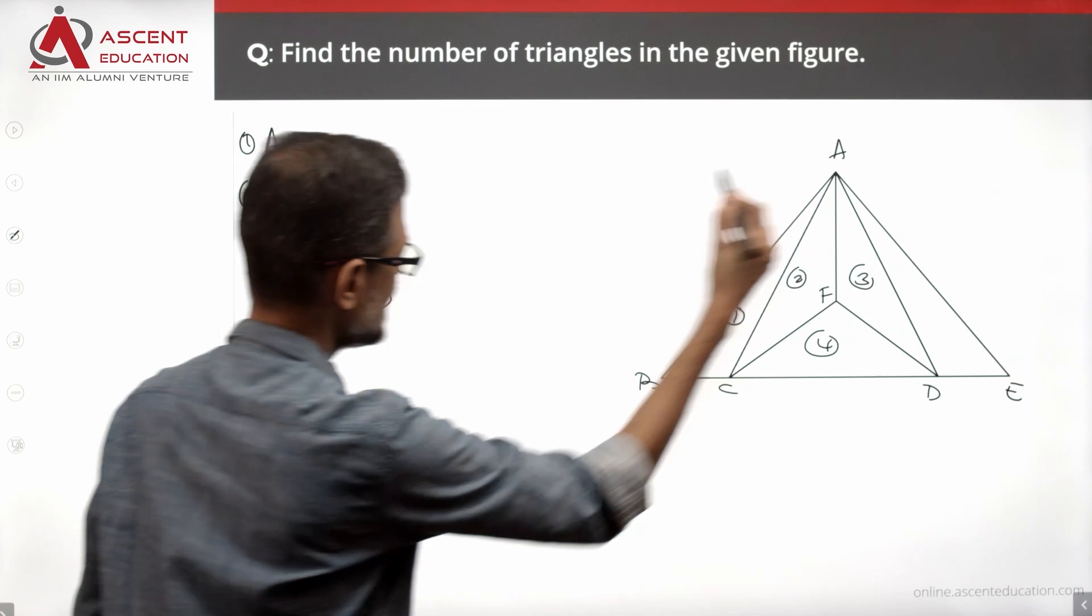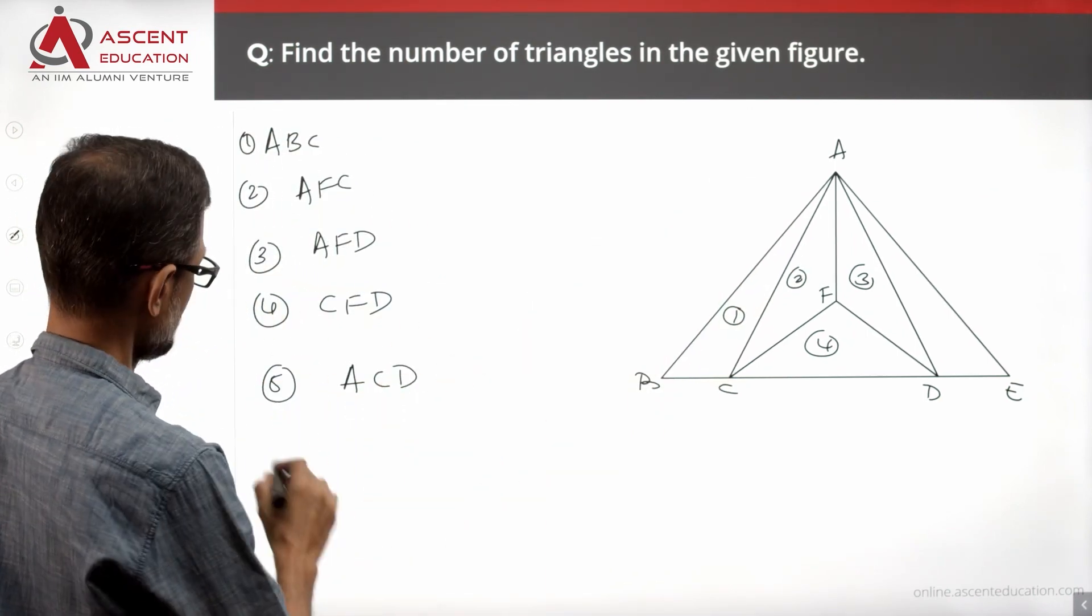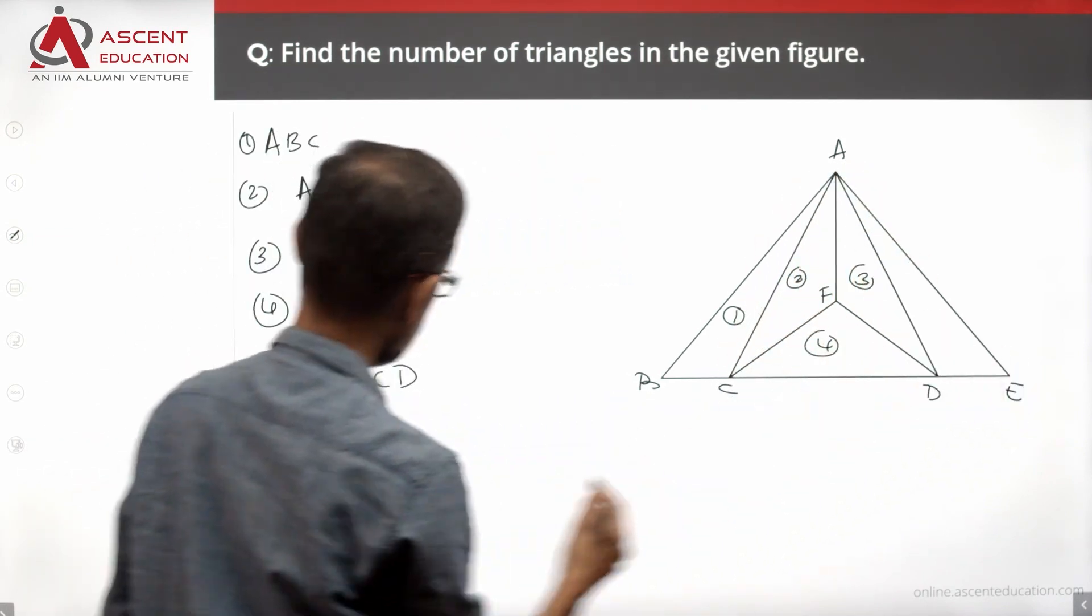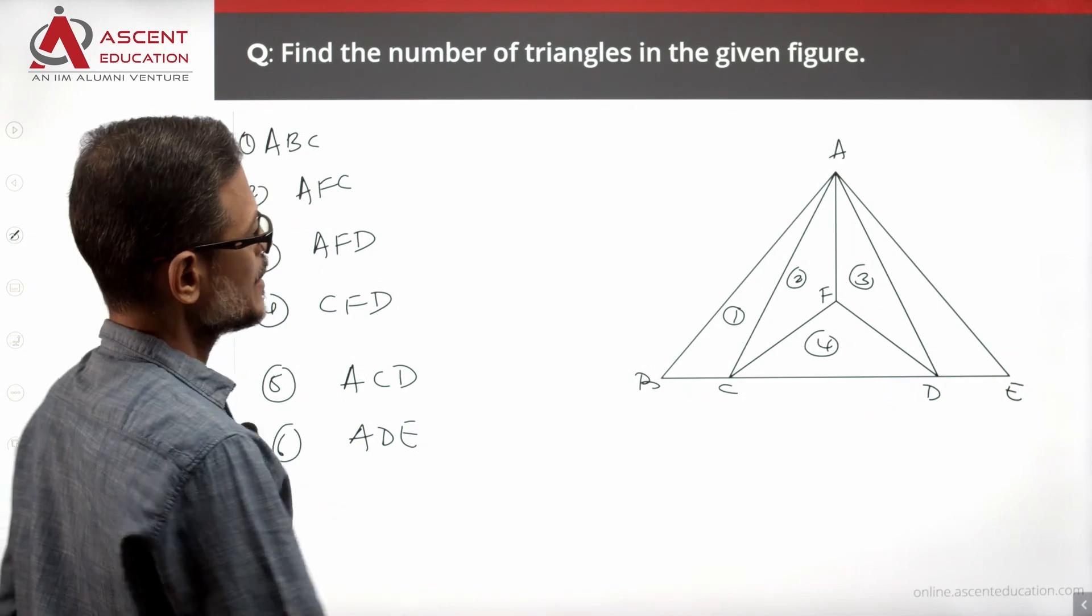Now, A, C, D is the fifth triangle. Sixth triangle: A, D, E is the sixth triangle. So, this is obvious - the sixth triangle.